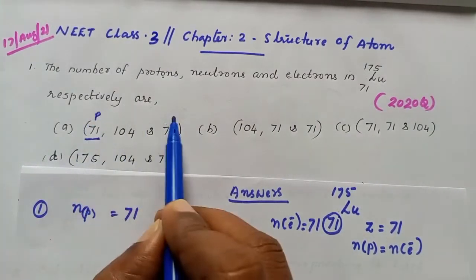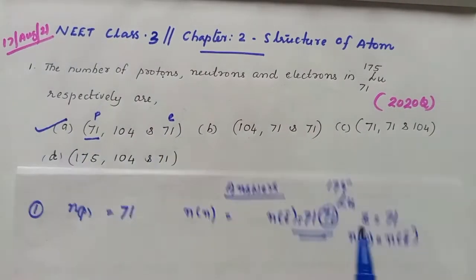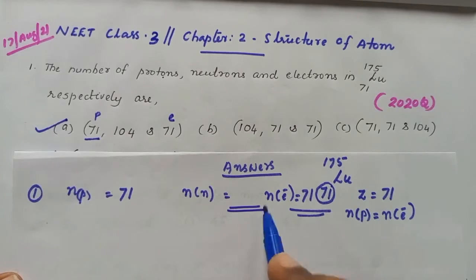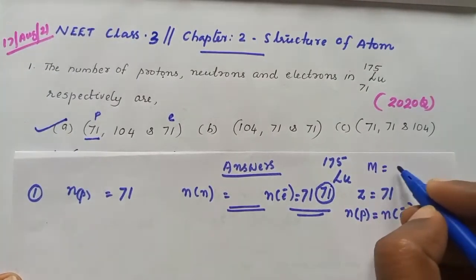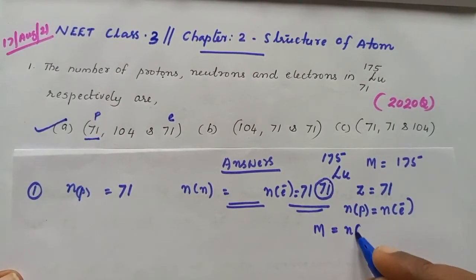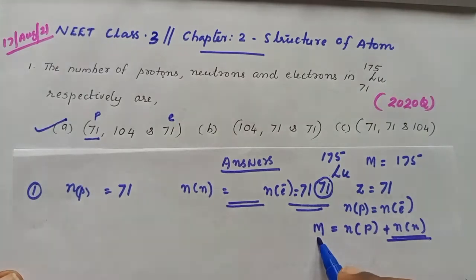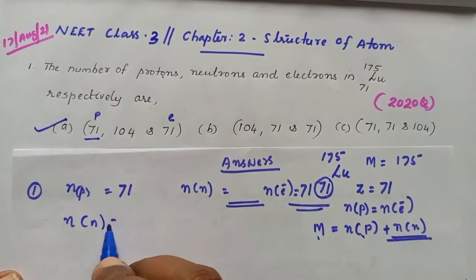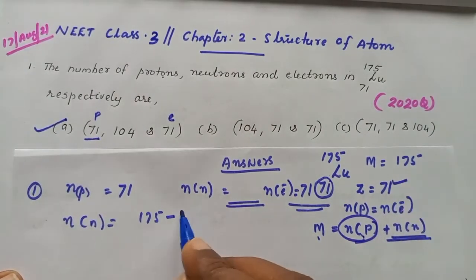Number of protons and number of electrons are the same. Then we can find out the number of neutrons from the mass number. Mass number is equal to 175. We know that mass number equals number of protons plus number of neutrons, so number of neutrons can be calculated by taking the difference: 175 minus 71.